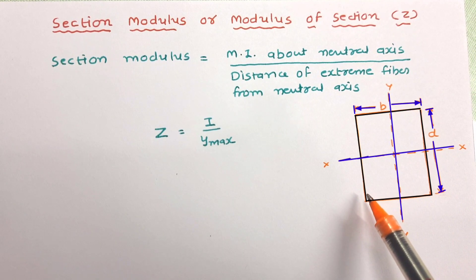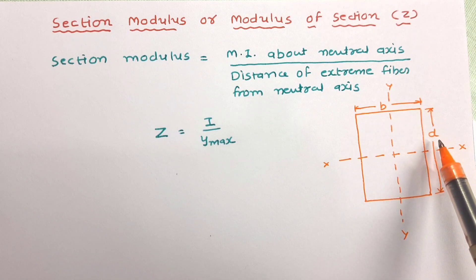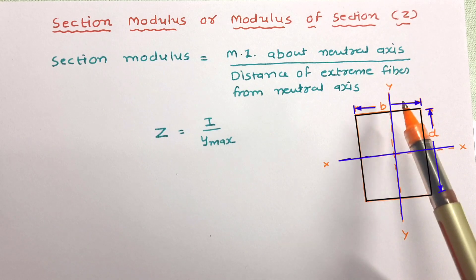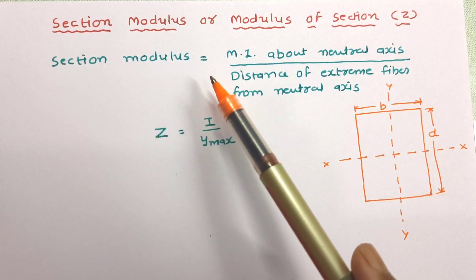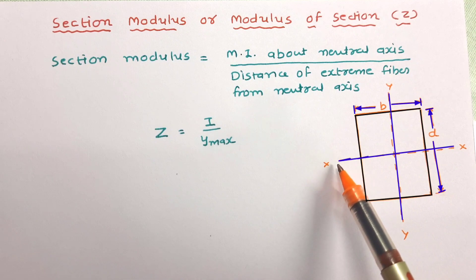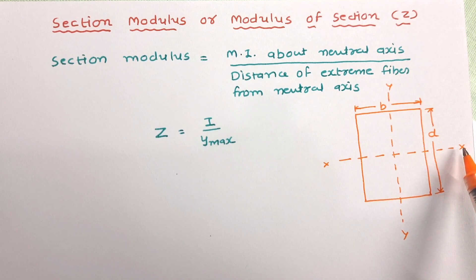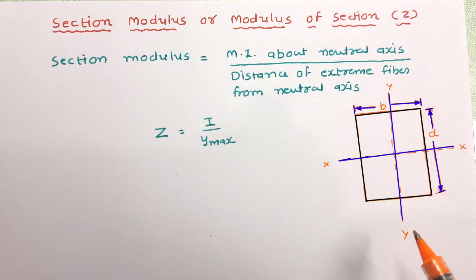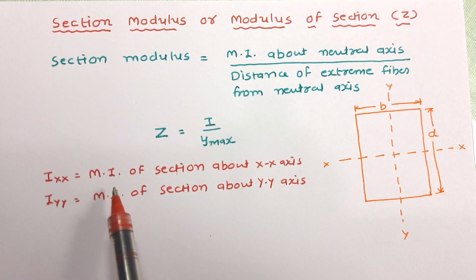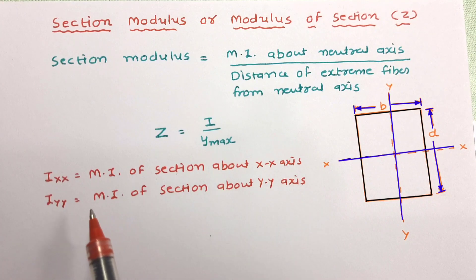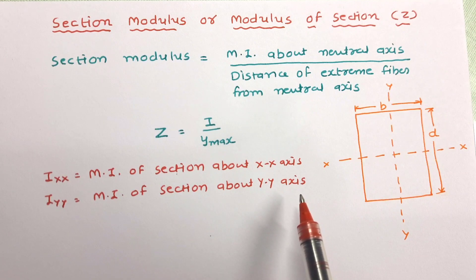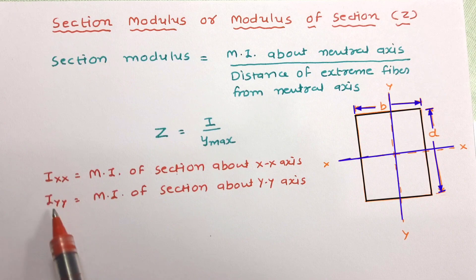This is a rectangle which has width B and depth D. This is the neutral axis XX and this is the neutral axis YY. Section modulus is the ratio of moment of inertia about the neutral axis. So the moment of inertia about neutral axis XX is I_XX, and about YY axis is I_YY. Now let us determine the section modulus about these two axes.